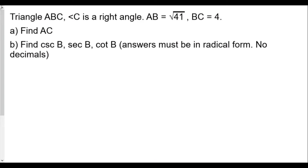This is our MRS 22 Spring 2022 midterm one review, question number one. This question is dealing with a Pythagorean theorem problem, but we're dealing with what's called reciprocal trig ratios — not like sine, cosine, tan, but their reciprocals. The very first thing we'll do is find the measure of one side of the right triangle. They don't give us a diagram, so you have to draw your own.